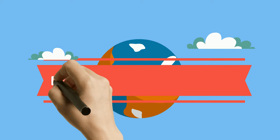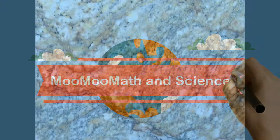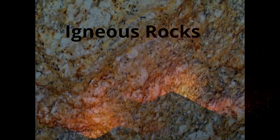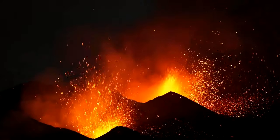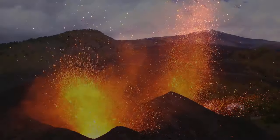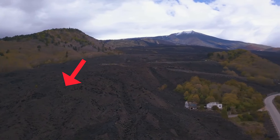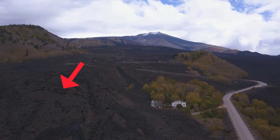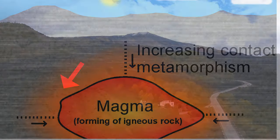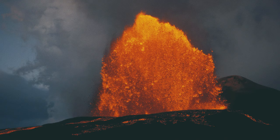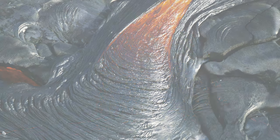Welcome to Moo Moo Math and Science. In this video, let's take a look at igneous rocks. Igneous rocks are created from molten rock. In fact, the name is derived from a Greek word for fire. Igneous rocks form from hot molten rock that cools and then solidifies. Igneous rocks may form from magma, which is found inside the earth, or lava, which is molten rock on the surface of the earth.